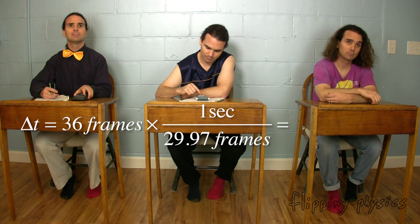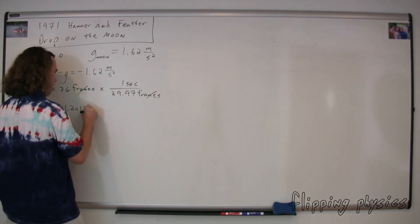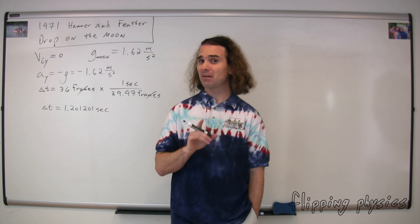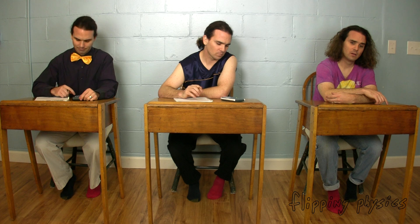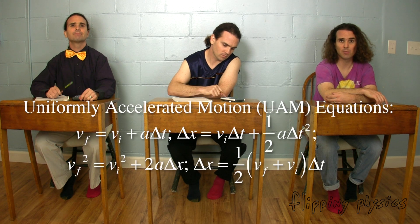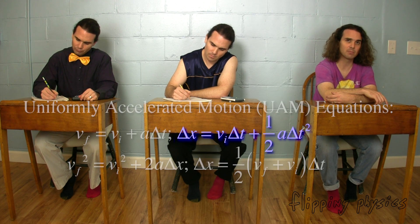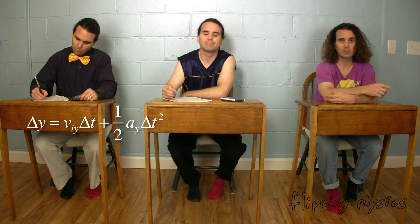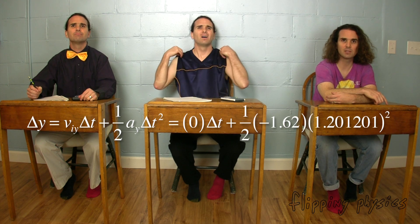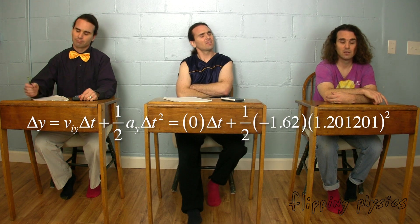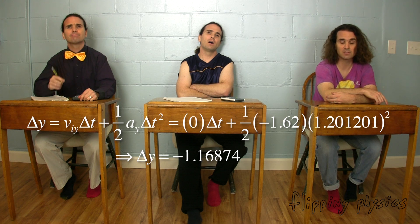36 frames. We need to convert the change in time from frames into seconds. There are 29.97 frames per second, so we multiply our change in time by the reciprocal of the frame rate. Our change in time comes out to 1.201 seconds. Given that information, we can figure out the initial height above the ground from which Mr. Scott dropped the hammer and feather. The acceleration is constant, so we use our uniformly accelerated motion equations. Using displacement equals initial velocity times change in time plus one-half times acceleration times change in time squared, and with initial velocity equal to zero, the displacement equals one-half times negative 1.62 times 1.201 squared, which gives us negative 1.16874, rounding to negative 1.2 meters using two significant figures.